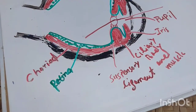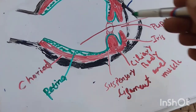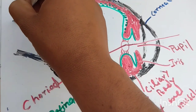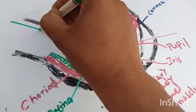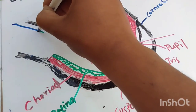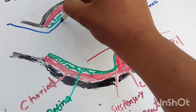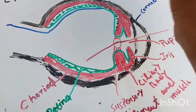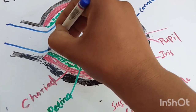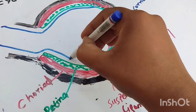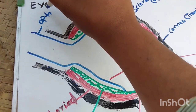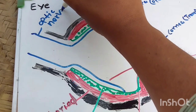The fourth layer is the neural layer, present above the retina. The neural layer comes through the neurons of the brain and enters into the eye to become the neural layer. This is the neural layer. This is the optic nerve.